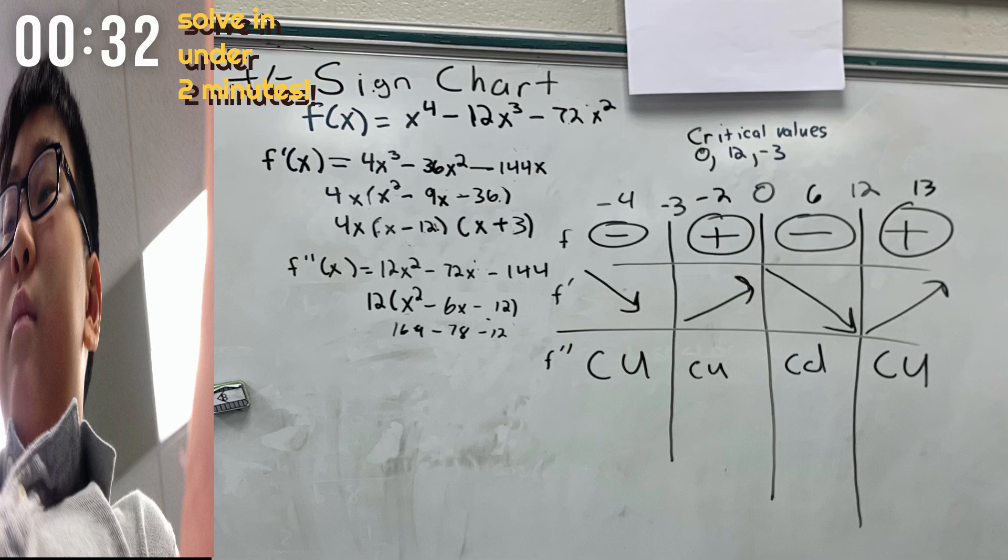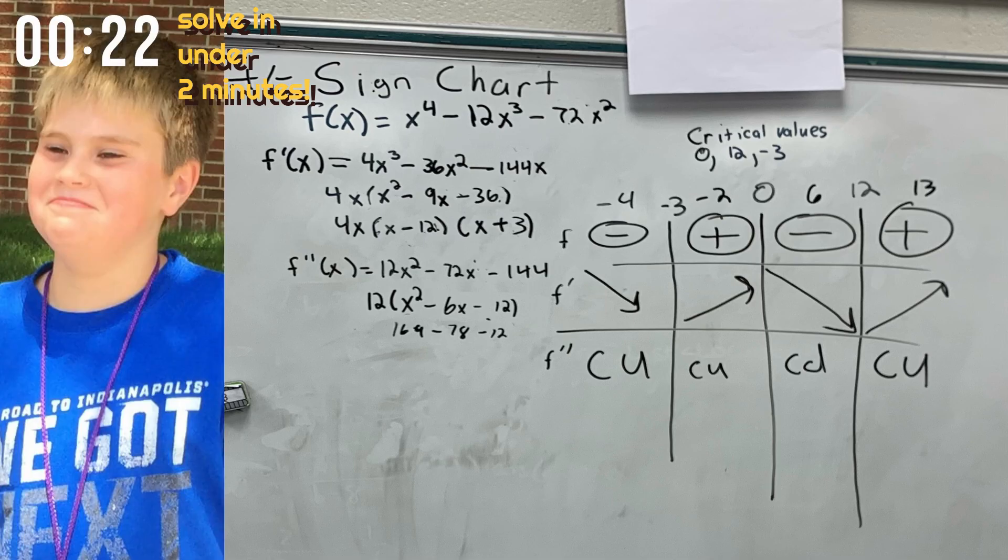As such, you're going to use the first derivative and get the second derivative. Factor out 12 from 12x squared minus 72x minus 144, which results in 12 parentheses x squared minus 6x minus 12. And now that you've found the second derivative, now you have to use the Sine Chart.